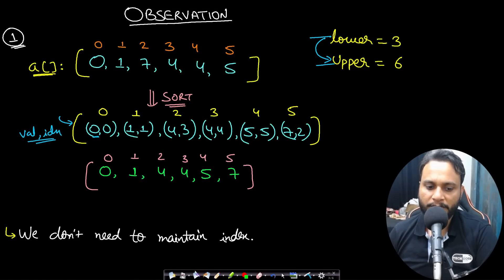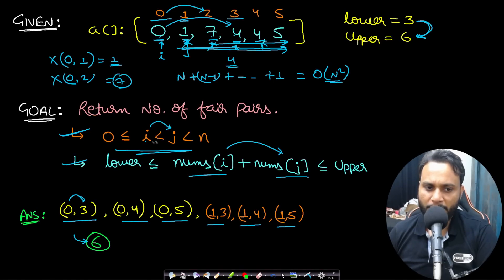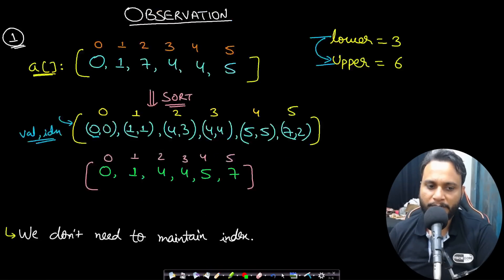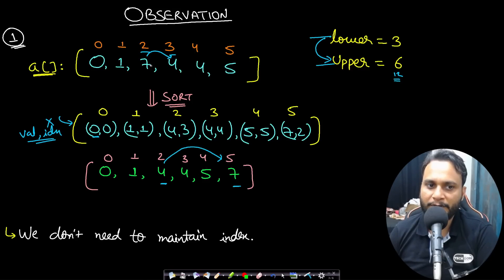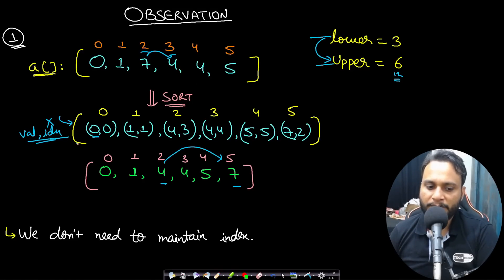But you know what, the first condition may be misleading. The constraint i < j only means that i and j should not be equal — you can swap i and j. You can assume any item to be i and any other item to be j. That is why we do not need to maintain the index. If 7 and 4 make a valid pair (say lower=3, upper=12, and 7+4=11 is valid), then even after sorting, 4 and 7 will still form the same pair counted exactly once. So we simply sort the array.